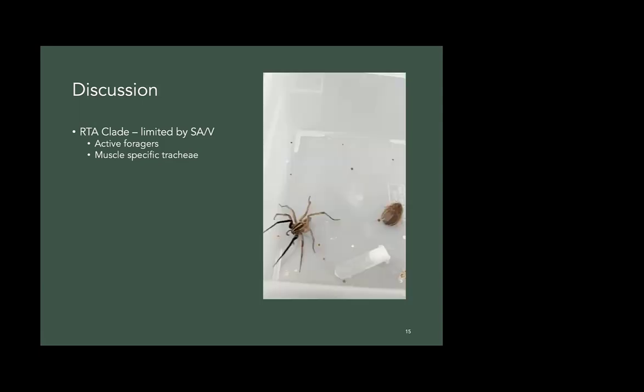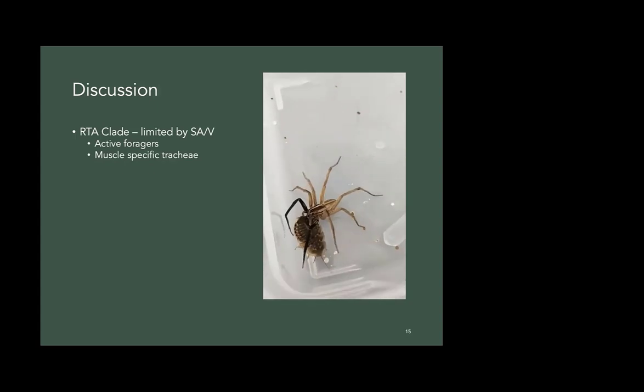So the RTA clade we saw scales pretty low, below the 0.66. So we would say that this is limited by surface area to volume ratio. And that makes sense because these guys are active foragers. Here's a video of a rabidosa. And they not only actively forage for prey, but they actively grab their prey and they don't let go. And they also have these muscle specific trachea that could help bring that slope down.